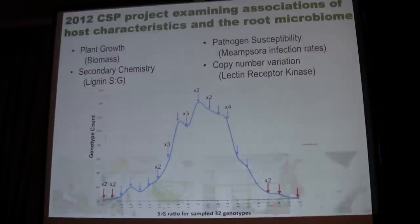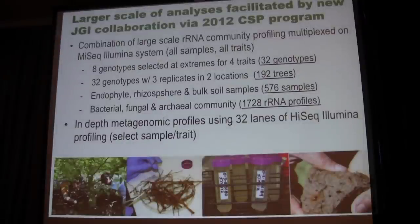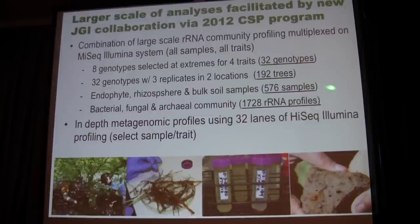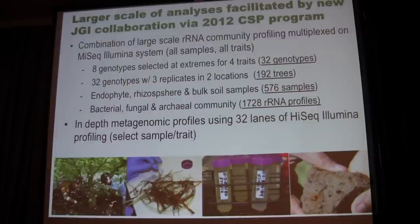JGI has graciously agreed to help us with the sequencing. We are doing a combination of large-scale ribosomal RNA community profiling using the MiSeq platform. We're looking at 32 different genotypes replicated at two locations, and we ended up with around 550 samples, since some plants weren't alive. Those are being profiled with ribosomal RNA. From those, we will select some of the most extreme variants in the microbiome we observe for in-depth metagenomic profiling of the rhizosphere.